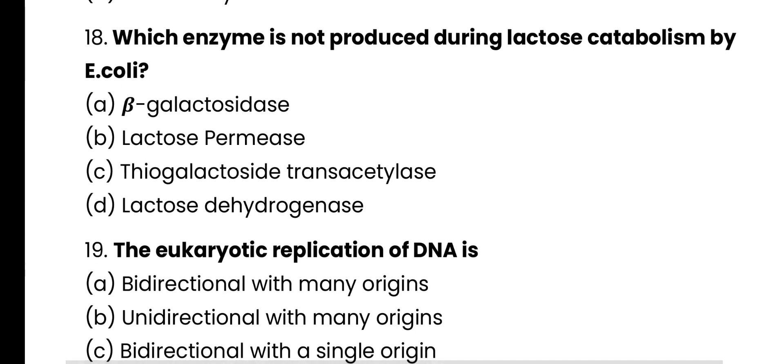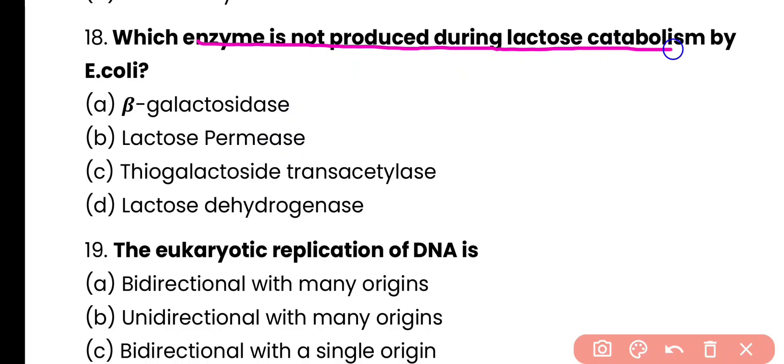Question number 18. Which enzyme is not produced during lactose catabolism by E. coli: beta-galactosidase, lactose permease, thiogalactoside transacetylase, or lactose dehydrogenase? Correct answer is option D. In lactose catabolism, there are three structural genes present; lactose dehydrogenase is not among them.